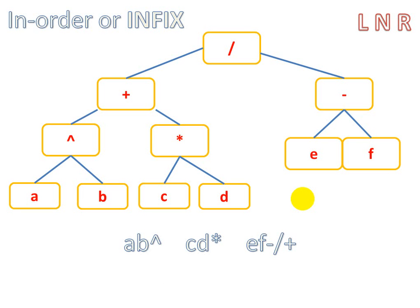A to the power of B. C multiplied by D, and E minus F, and then, of course, this is wrong. This is wrong.